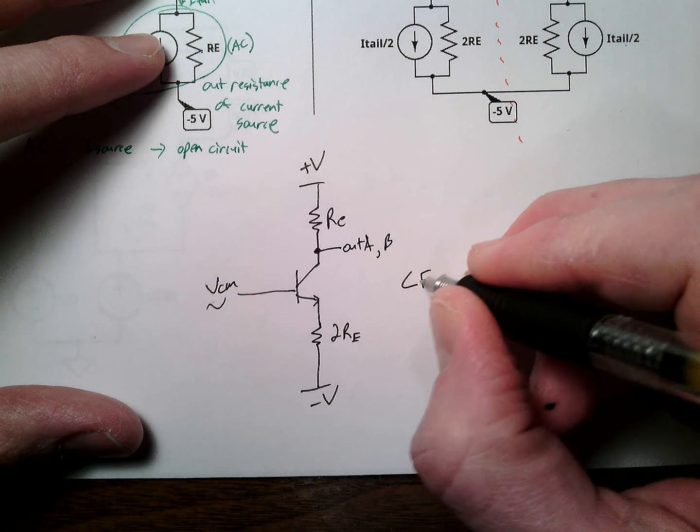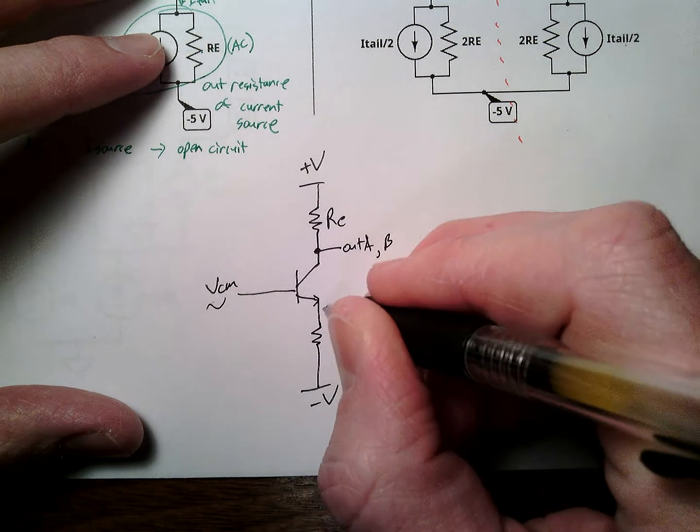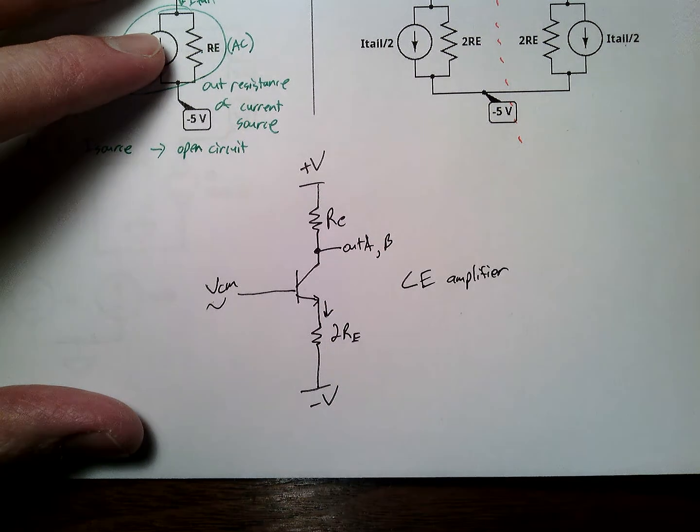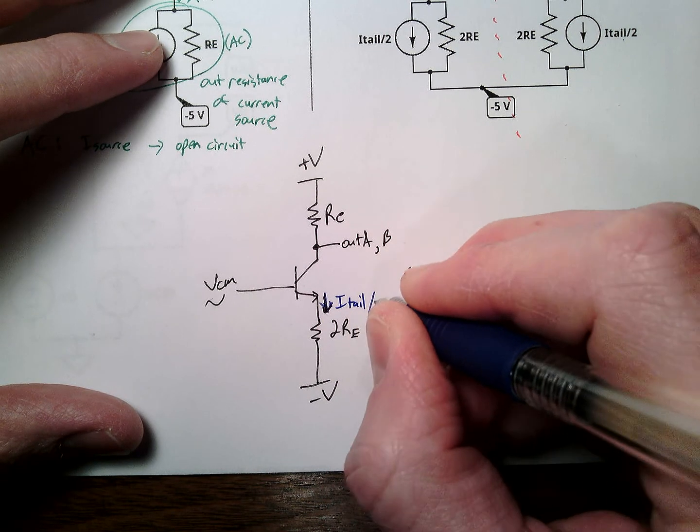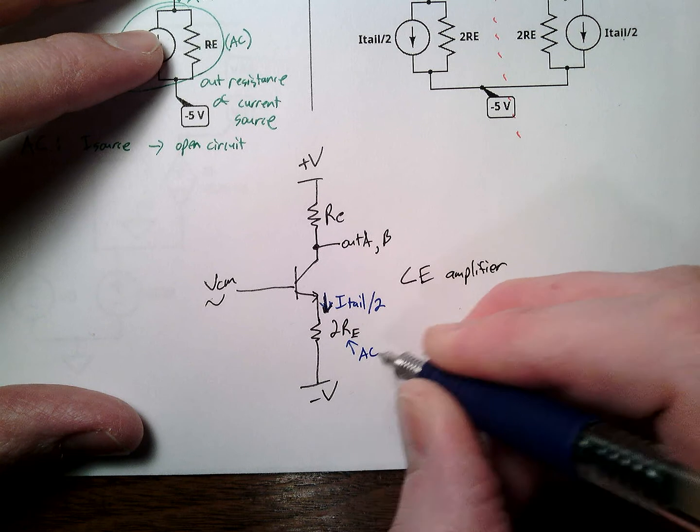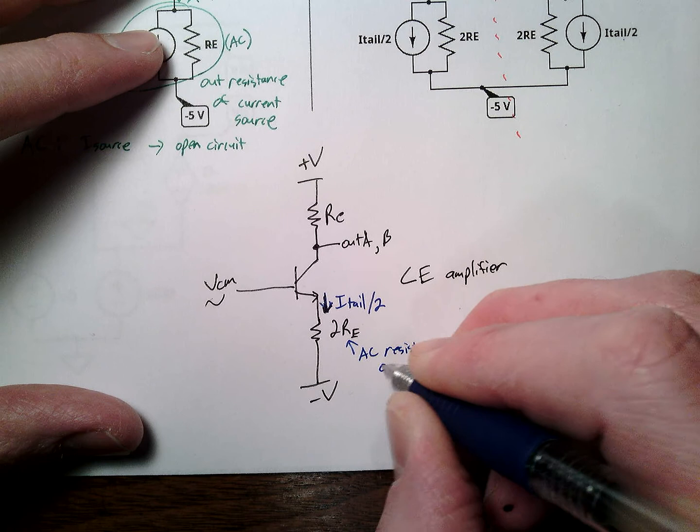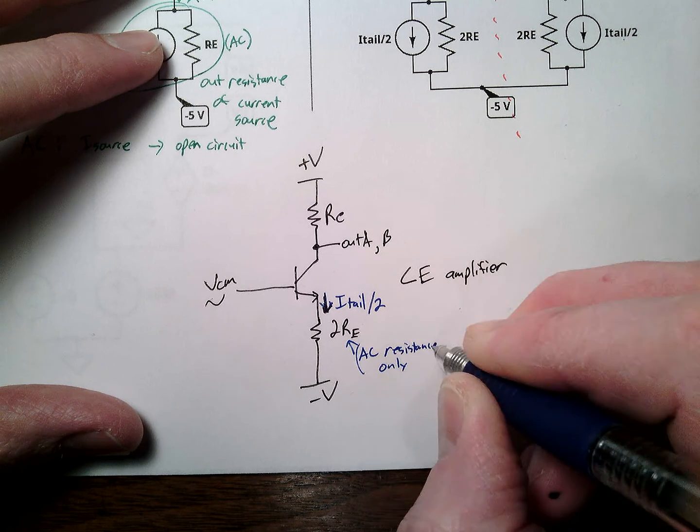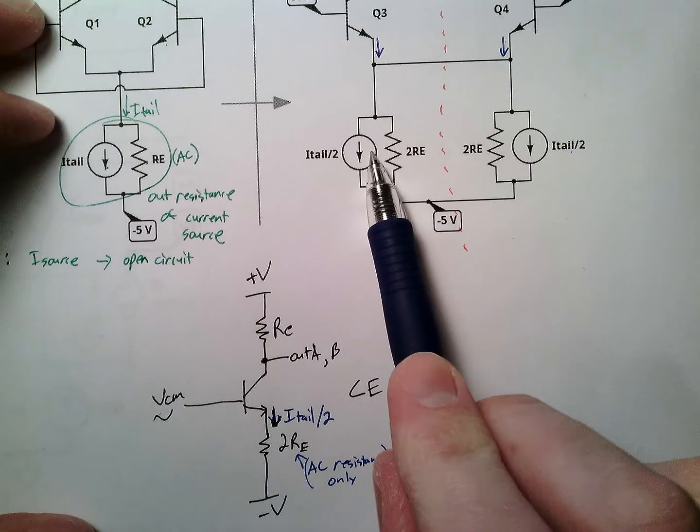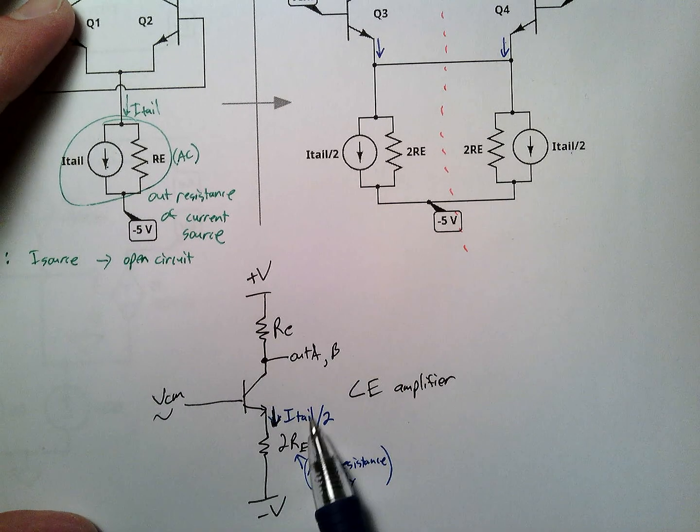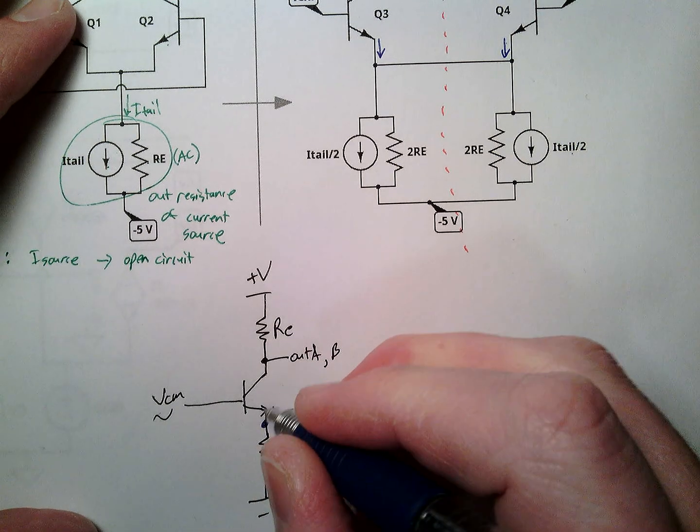Remember that this value, this value is I tail over 2, this is AC, AC resistance only. Please don't analyze this RE in this setup, since we have the current source, as to find the DC value of the emitter voltage here. Watch out for that.